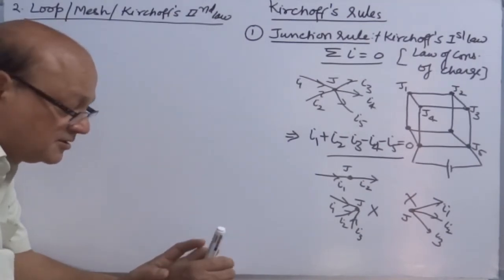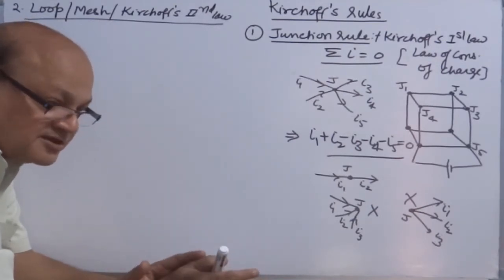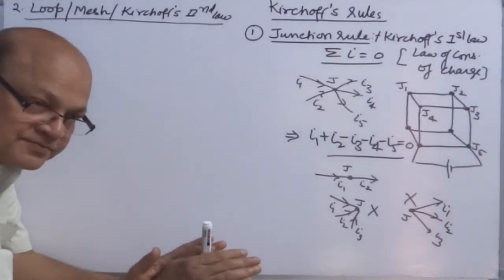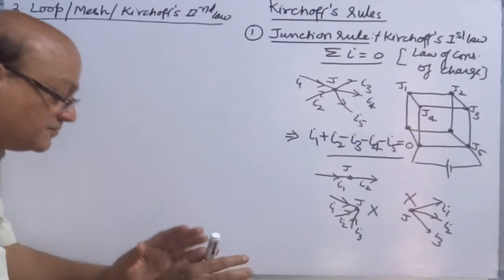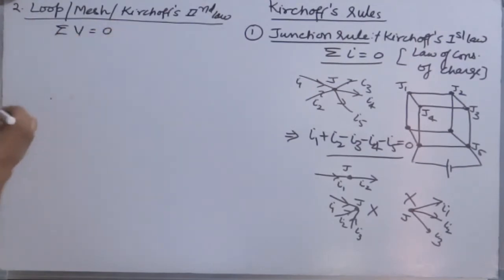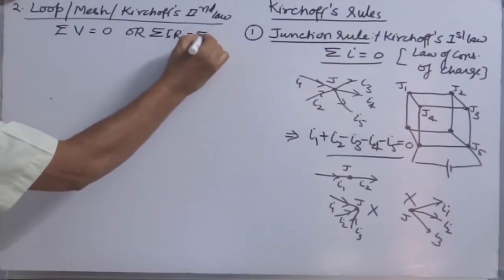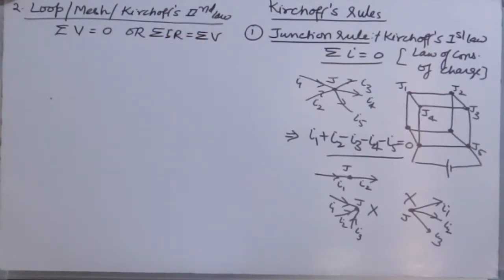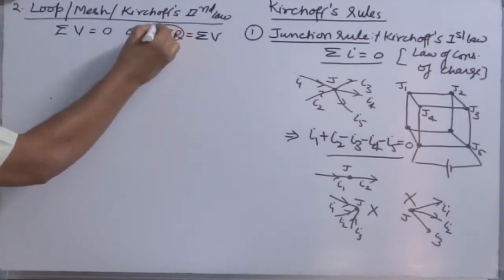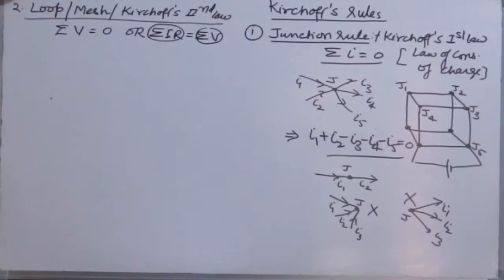I repeat, the total algebraic sum of changes in potential around the closed loop is always 0. So the mathematical expression: you can say sigma V is equal to 0, or you can put it as sigma IR is equal to sigma E. That is, total potential difference across resistors in the loop, sum of it, is equal to the total sum of the EMF of the cells in the loop.